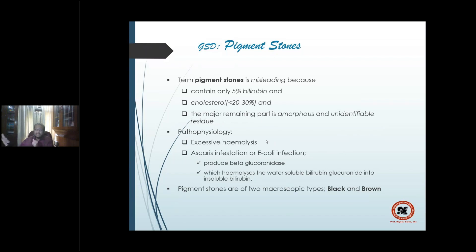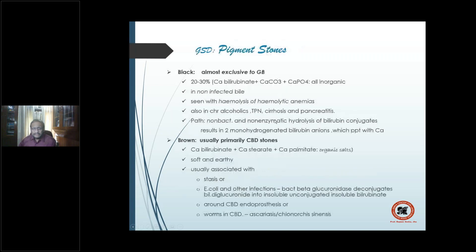In pigment stones, the pathophysiology involves either excessive hemolysis, Ascaris infestation, or E. coli infection producing beta-glucuronidase, which hydrolyzes water-soluble bilirubin glucuronide into insoluble bilirubin, precipitating it and giving rise to pigment stones. Black stones are almost exclusively gallbladder stones; brown stones are usually primary CBD stones — black goes with gallbladder, brown goes with CBD.